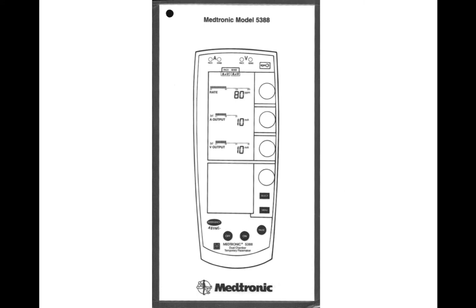Today I wanted to talk briefly about the Medtronix pacemaker that you will find in a lot of critical care settings. This is a dual chamber pacemaker — a temporary pacemaker that works with epicardial wires, temporary transvenous wires, as well as pacer swans. It's a very versatile pacemaker generator that can be used with any of those different devices.